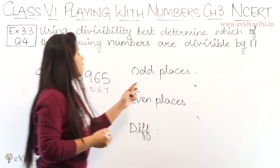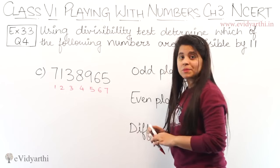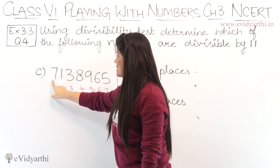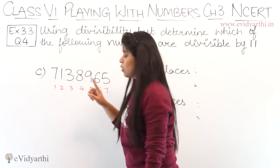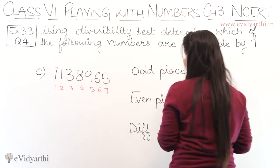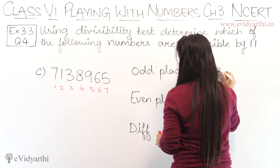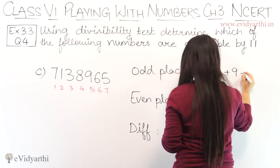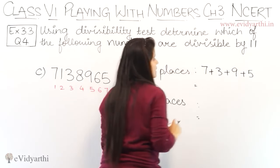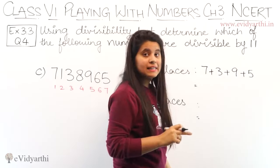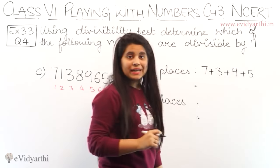Now, we will add the digits at odd places. The odd place digits are at positions 1, 3, 5, and 7 — which are 7, 3, 9, and 5. So, 7 plus 3 is 10, 10 plus 9 is 19, and 19 plus 5 is 24. So the sum of odd place digits is 24.